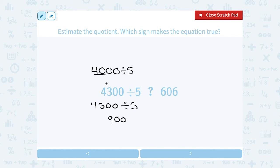Well, 5 goes into 40 eight times, and then this has two more zeros, so I'm going to bring down two more zeros. Well, if 4,000 divided by 5 is 800, and 4,500 divided by 5 is 900, the actual number was in between there. So my answer would be somewhere in between or in the middle of 800 and 900. So that has to be larger or greater than 606.